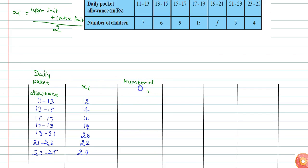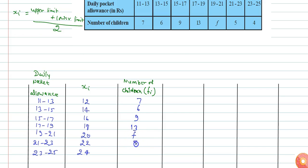The number of children, considered as Fi for each Xi, will be 7, 6, 9, 13, f, 5, and 4. Here I am using the step deviation method, in which we shall calculate ui for each Xi.